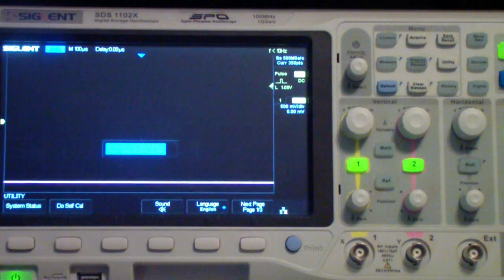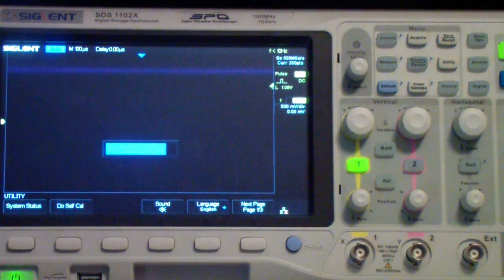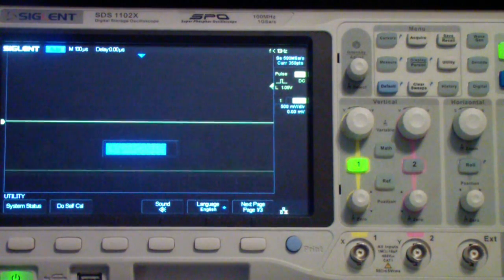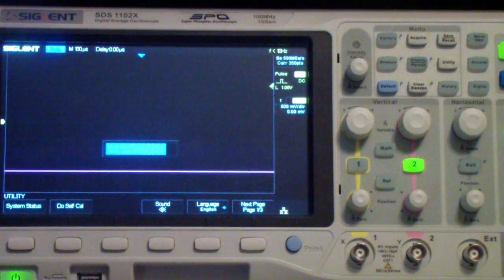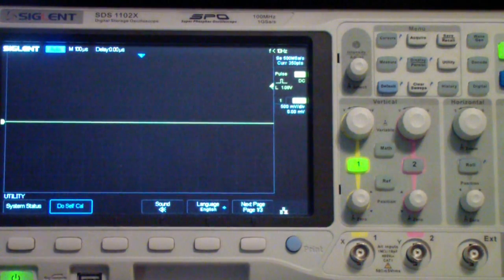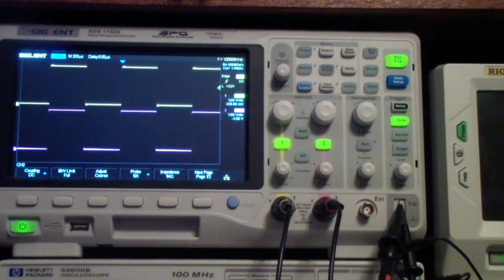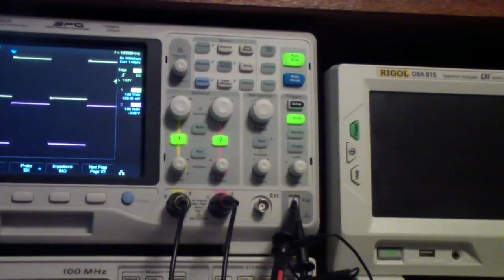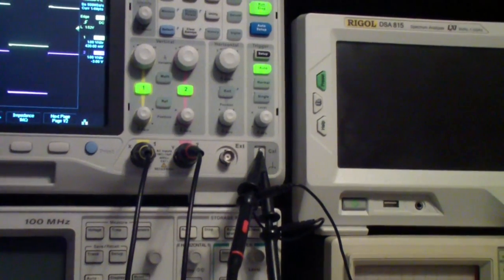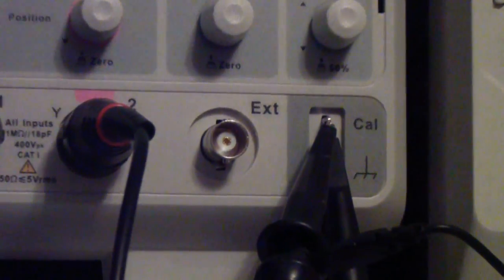Okay, now we're back and it's near the end of its calibration cycle. This has taken about two or two and a half minutes. I haven't actually timed it. And now it has completed and it says press run stop to exit. And so I'll do that up here. And the oscilloscope is now calibrated. Here you see the oscilloscope probes are connected to the compensation signal.